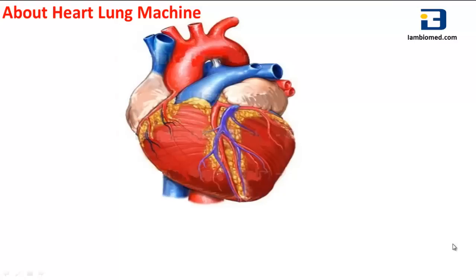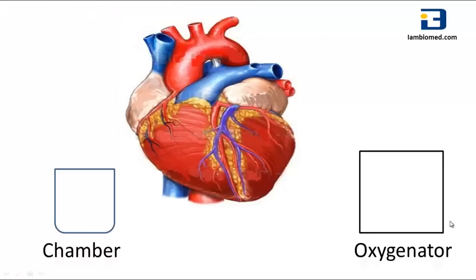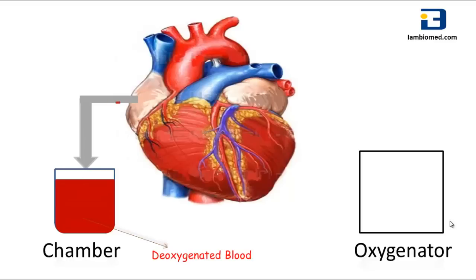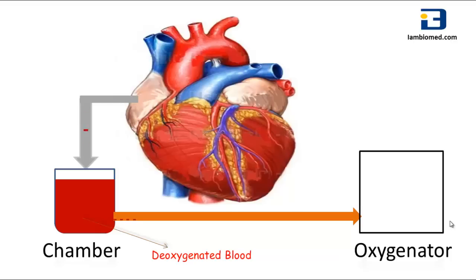The heart lung machine consists of a chamber and an oxygenator, and is connected to the patient by a series of tubes. One tube is placed in the right atrium. The chamber receives the deoxygenated blood from the body, which is the function of the right atrium, and the blood collected in the chamber is deoxygenated blood.